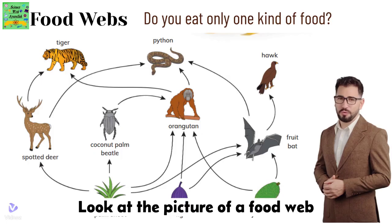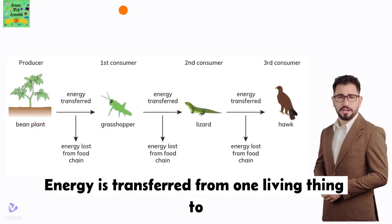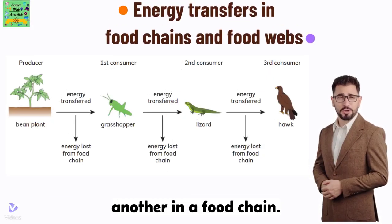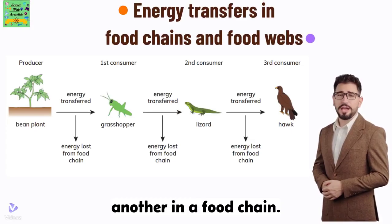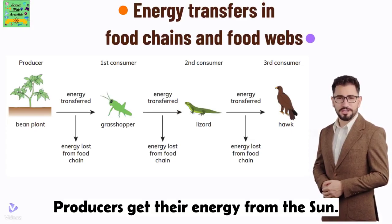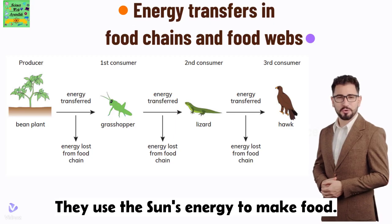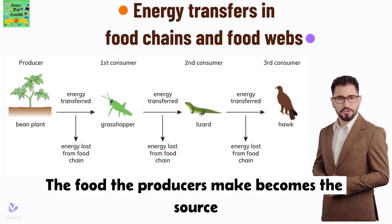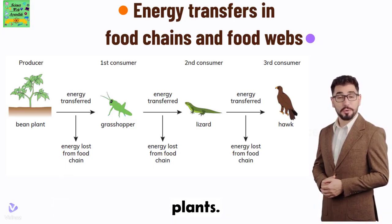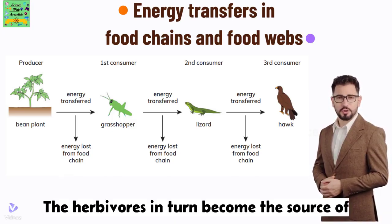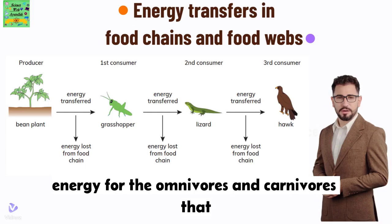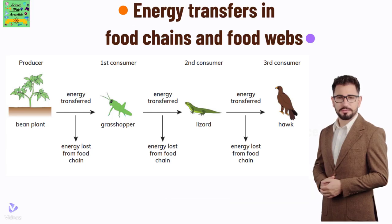Look at the picture of a food web. Energy is transferred from one living thing to another in a food chain. Producers get their energy from the sun; they use the sun's energy to make food. The food the producers make becomes the source of energy for the herbivores that eat the plants. The herbivores in turn become the source of energy for the omnivores and carnivores that eat them.